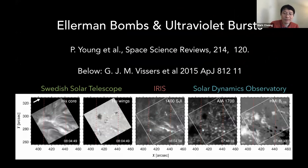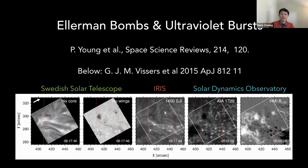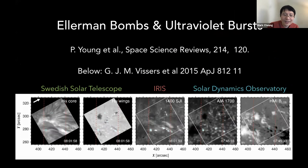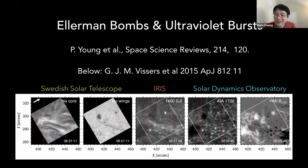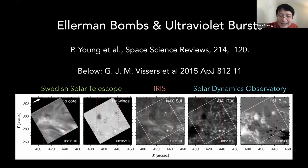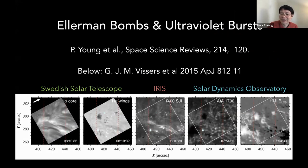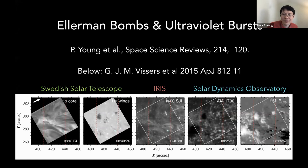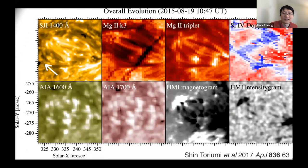There are studies on Ellerman bombs and UV bursts. Data from the Swedish Solar Telescope, IRIS, and the Solar Dynamics Observatory show little brightenings in the low atmosphere that are often co-spatial with Ellerman bombs in the H-alpha wings — signatures of magnetic cancellation and reconnection in the low atmosphere. Another study confirms this point. There's just such a great opportunity for studies combining different observatories.